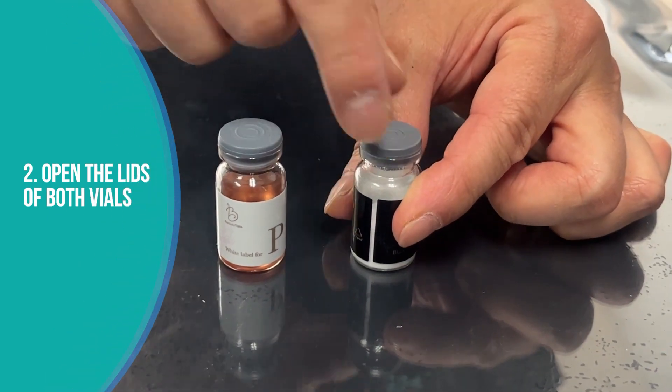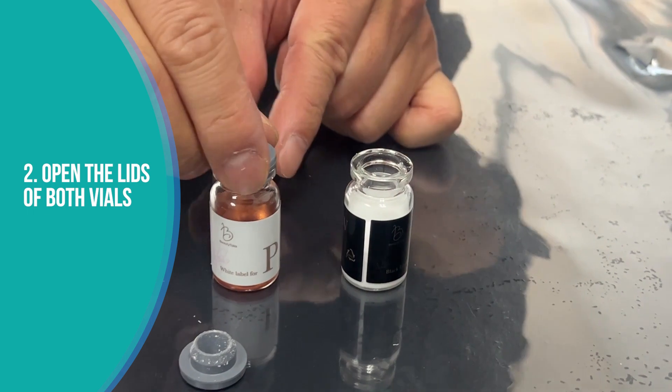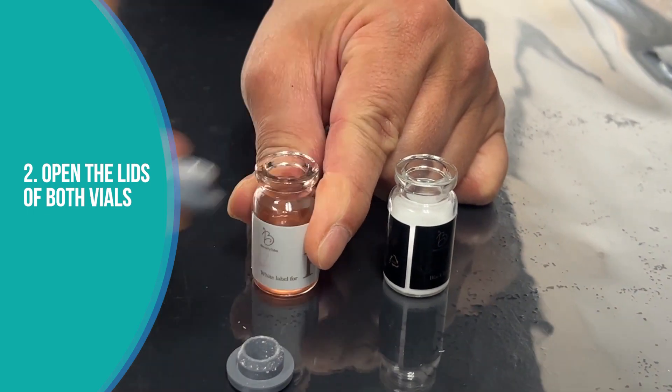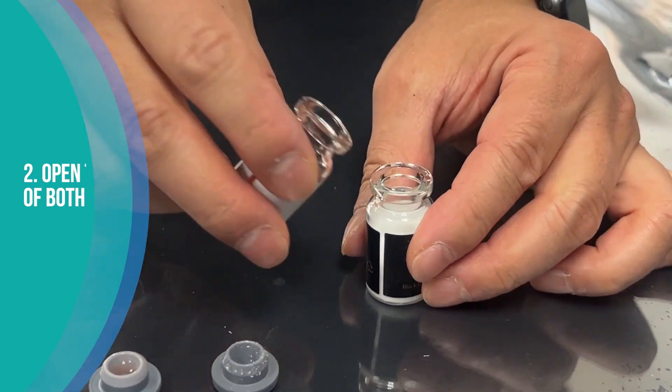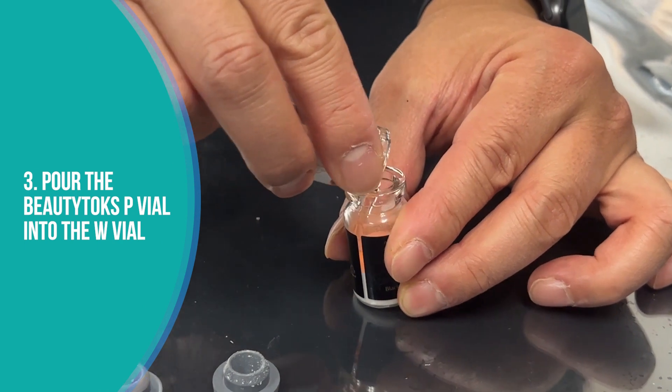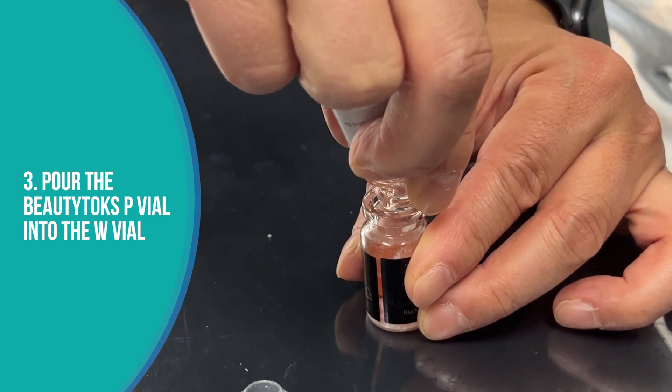Open the lids of both vials. Pour the Beauty Tox P vial into the W vial.